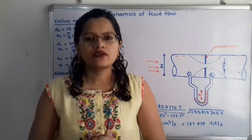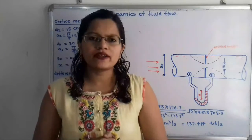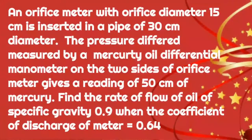Hello friends, this is Priyanka. Today we are going to solve a problem on dynamics of fluid flow. In this video we are going to find out the rate of flow of oil in a pipe with the help of an orifice meter. An orifice meter with orifice diameter 15 centimeter is inserted in a pipe of 30 centimeter diameter. The pressure difference measured by a mercury-oil differential manometer on two sides of the orifice meter gives a reading of 50 centimeter of mercury. Find the rate of flow of oil of specific gravity 0.9 when the coefficient of discharge of the meter is equal to 0.64.